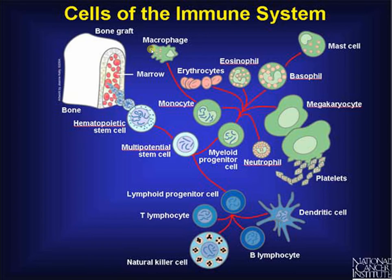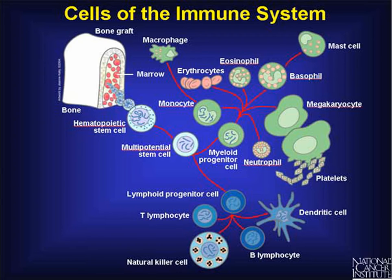Macrophages also produce cytokines, which activate neutrophils, and neutrophils produce more cytokines that activate more macrophages. This creates a positive feedback loop called the cytokine storm, which opens more and more blood vessels. The cytokine storm floods the body with blood and white blood cells, causing a massive amount of clotting and internal bleeding, creating problems across all body systems.